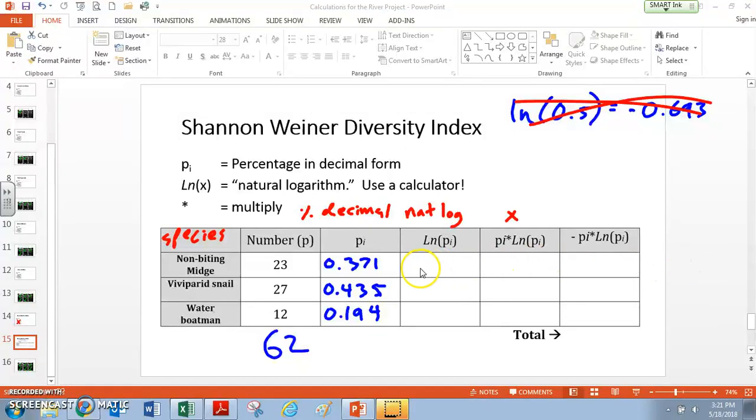So in order for this to work, I have to take the natural log of 0.371, put that here. Find the natural log of 0.435, put that here. Find the natural log of 0.194, and put that here. So I'm going to go ahead and pause the video and fill those in so you can see what it would look like for each of those if I used the natural log for that number.